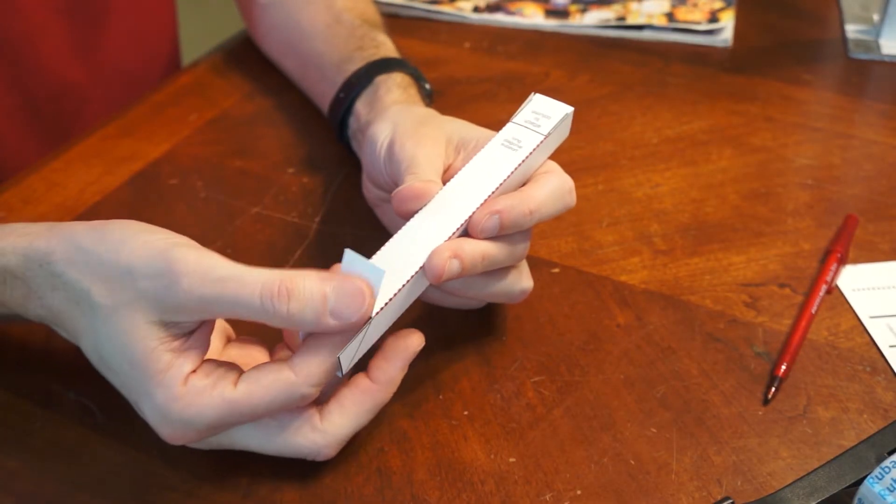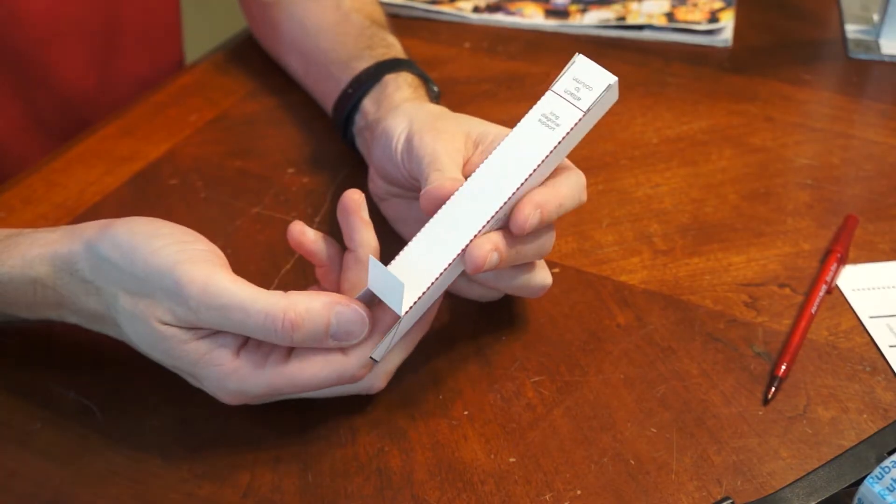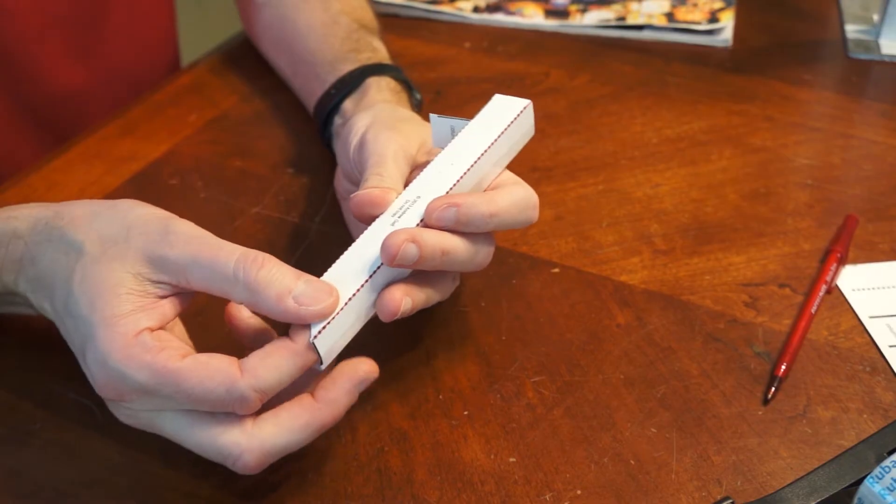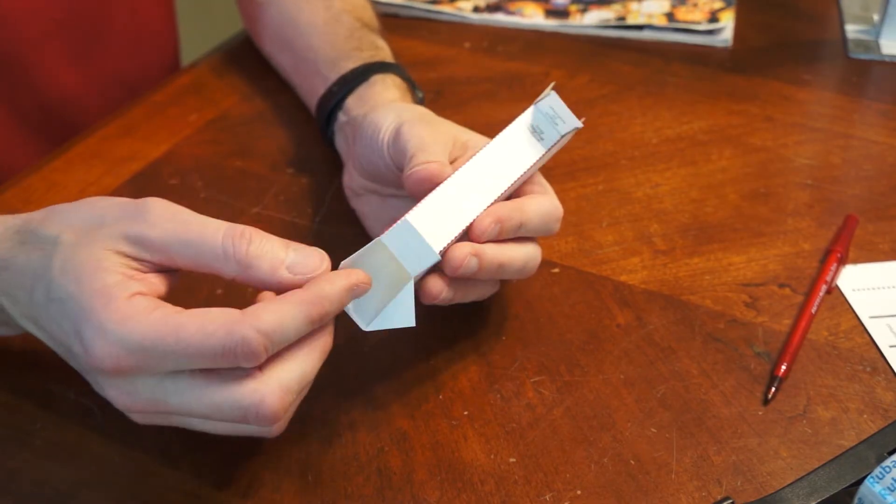These two flaps at each end are going to be folded valley folds. Valley fold here. And these two little triangular flaps are going to also be valley folds like this.